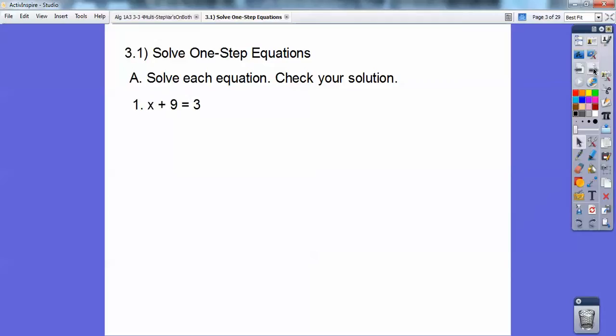So solve each equation and check your solution. Here, I see this plus 9. I'm going to go ahead and subtract 9 from both sides right there, and I get x equals negative 6 when I do that.